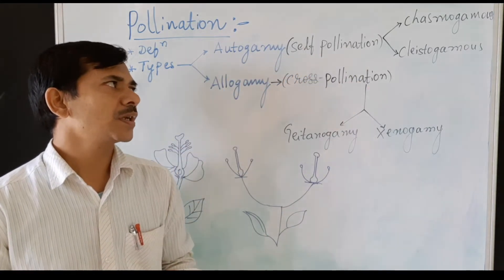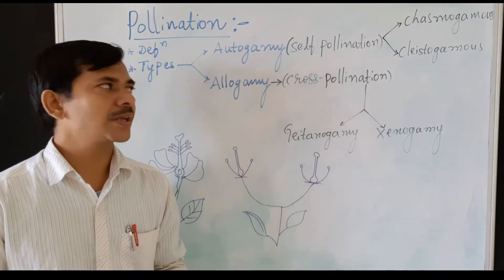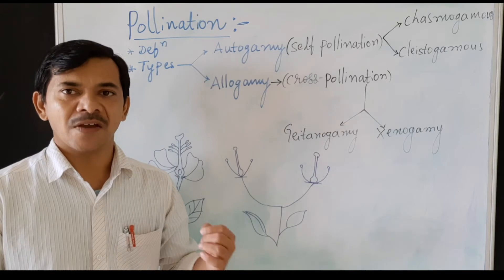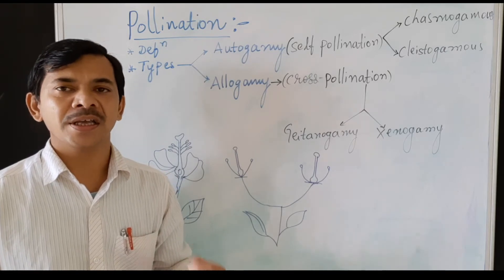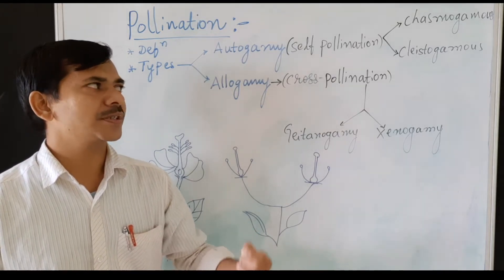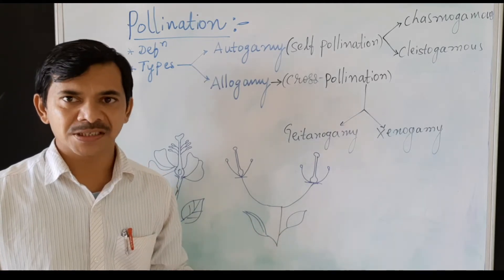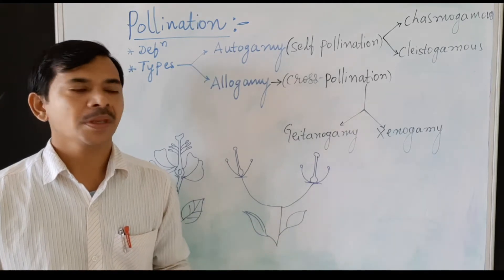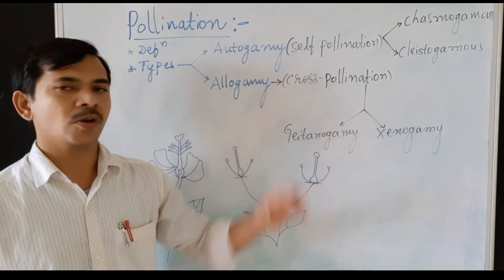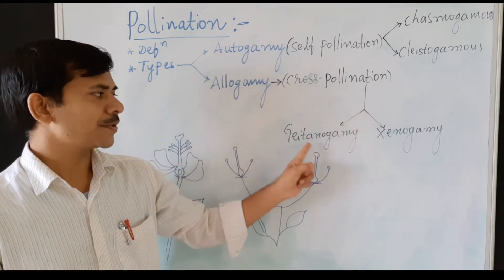The two types of flowers in autogamy are chasmogamous flowers and cleistogamous flowers. I will discuss the differentiation between these in detail later in this session. For allogamy, which is cross-pollination, there are also two types: geitonogamy and xenogamy.